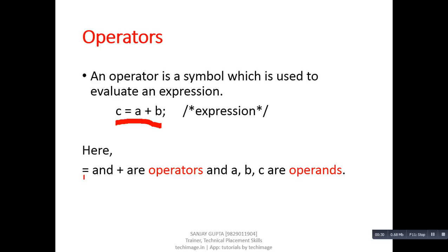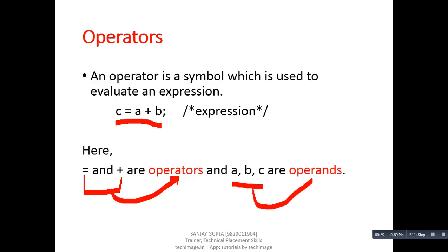So, plus and equals to are considered as operators, whereas a, b, c — these variables are considered as operands.